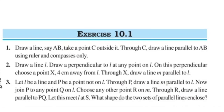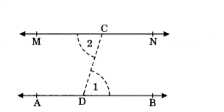Here we have to draw one line AB and outside we have to take one point C, and through C we have to draw a line parallel to AB. See the steps: first draw a line AB, then take any point D on it. Now join the given point C to D, and mark angle 1 equal to angle CDB. Mark angle 2 equal to angle 1 at C and produce to both sides. Now MN is the required line.